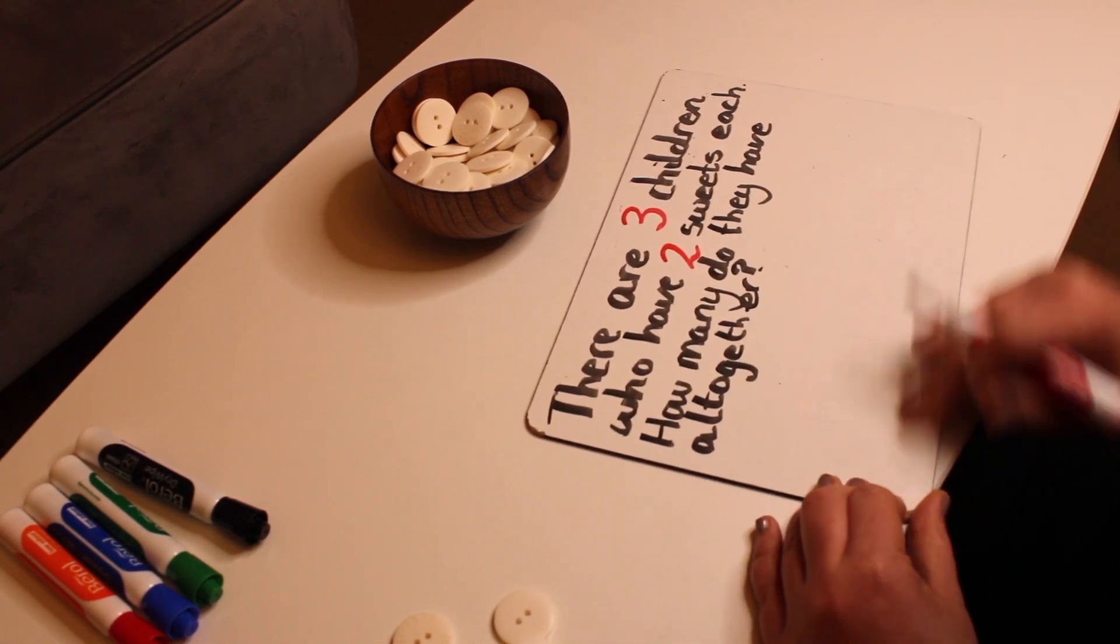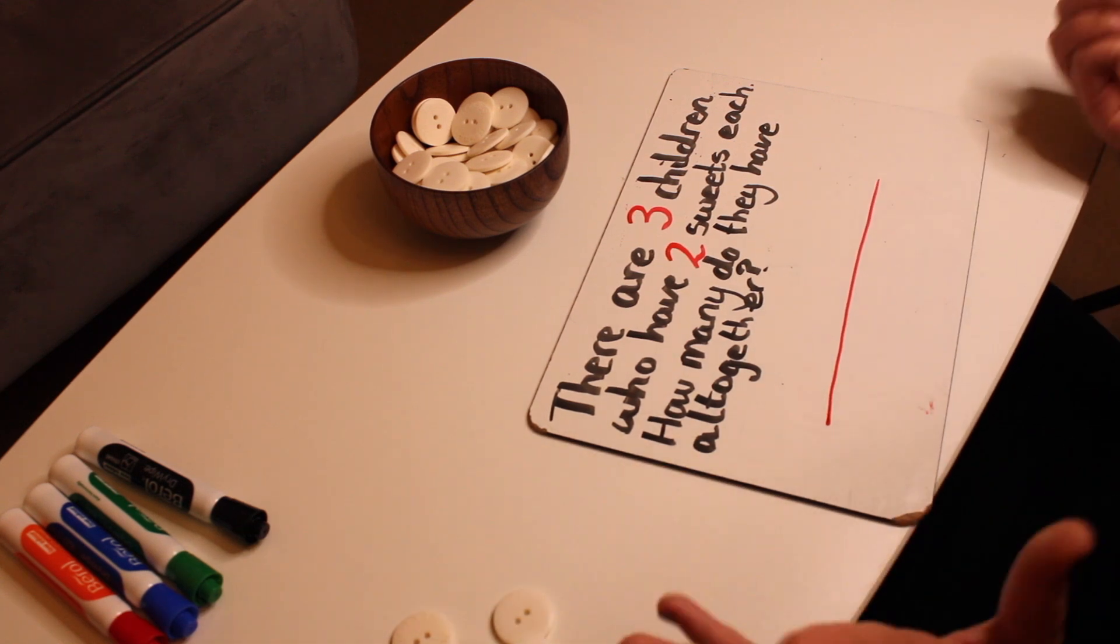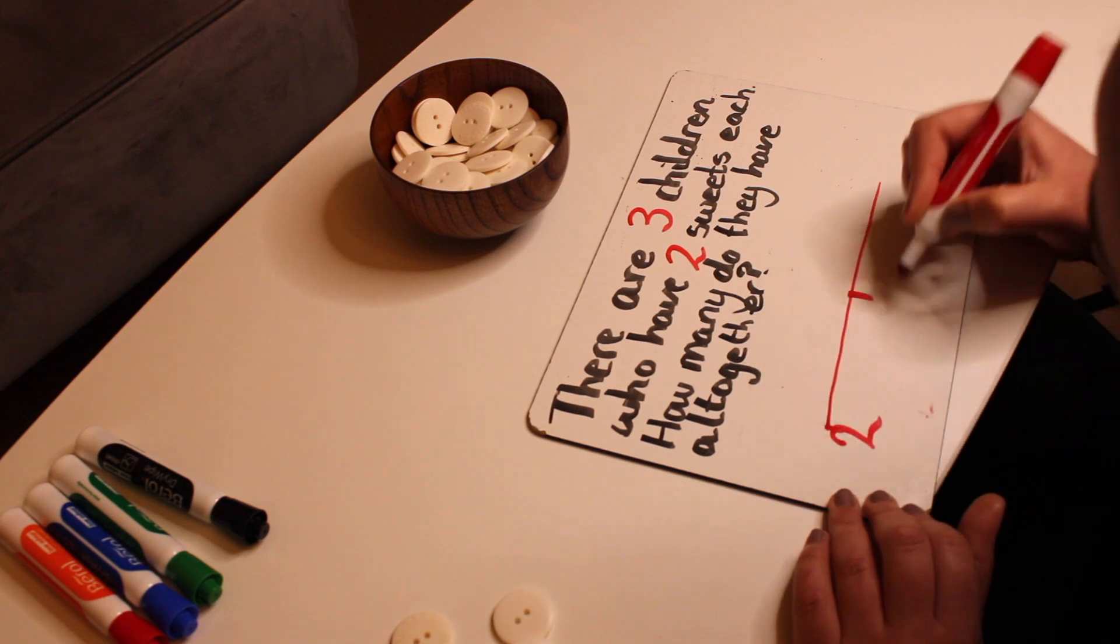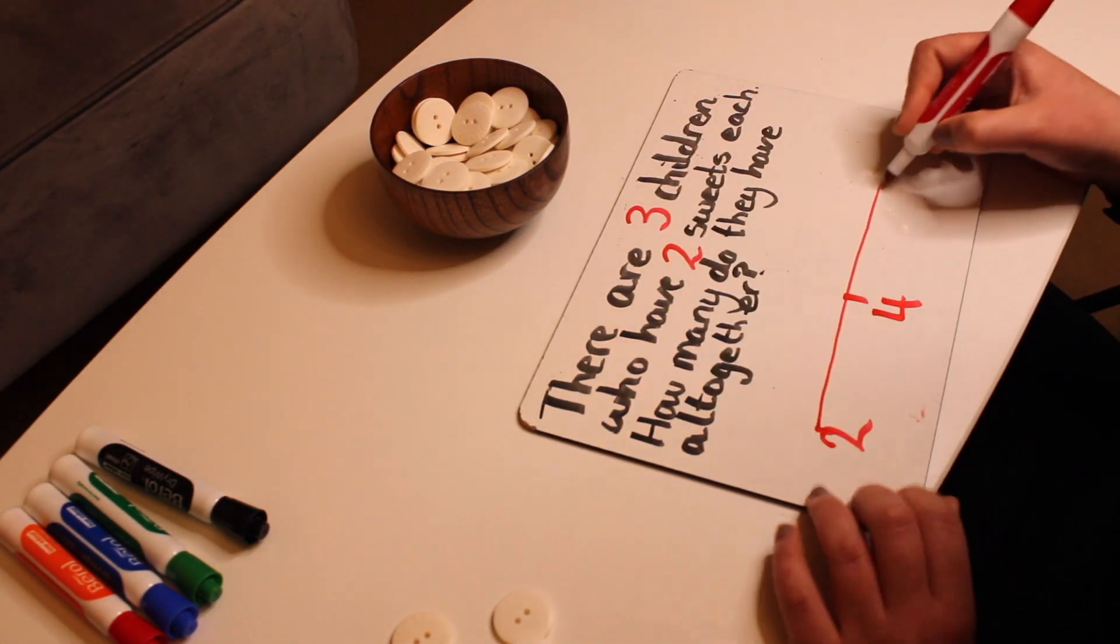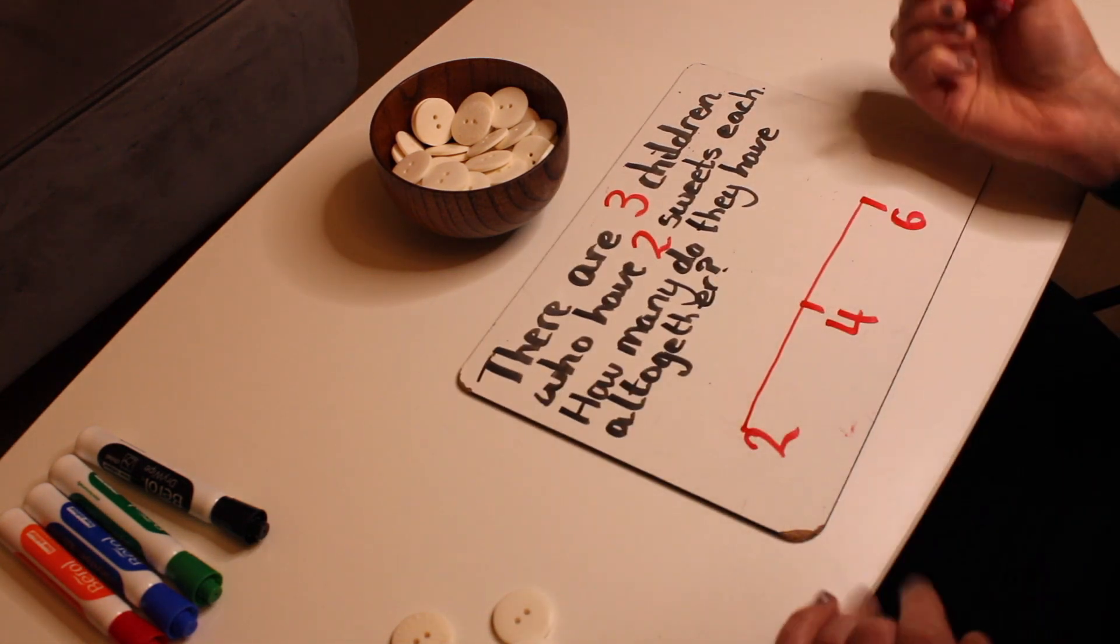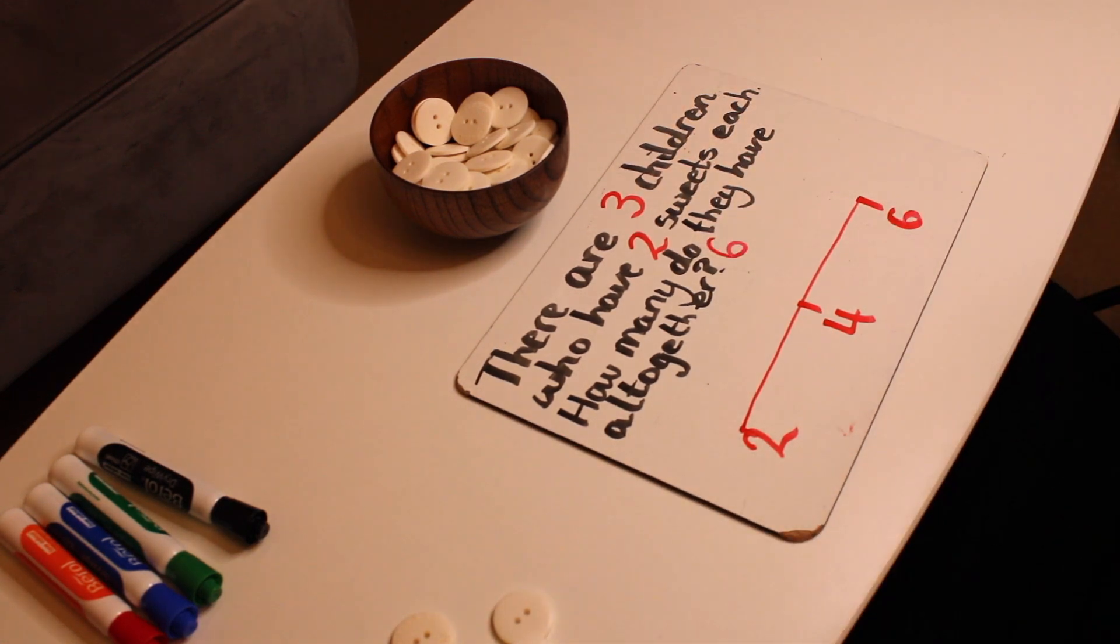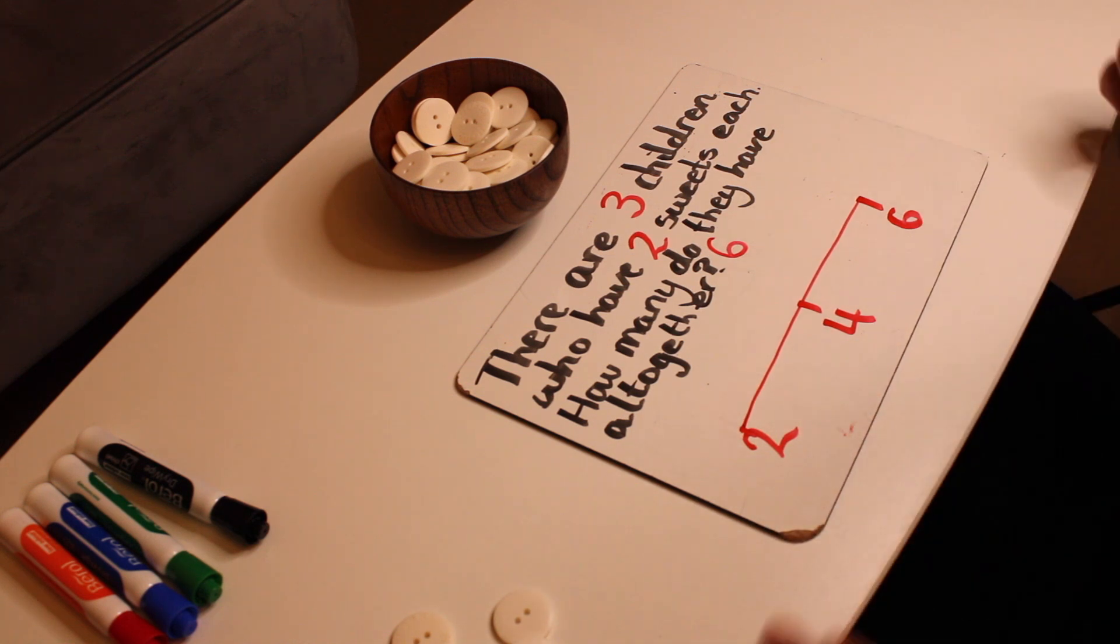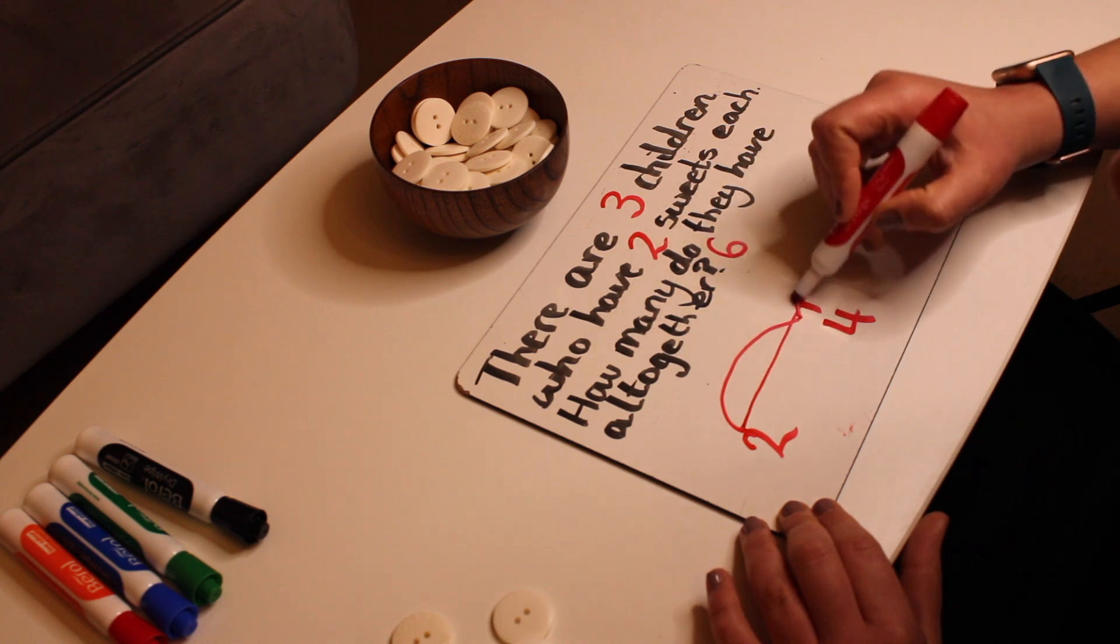Next, you can use the number line. So you can show them on the number line. So one child has two. The other child has, then it's four. Two and two make four. And then another two is six. All the children together have six. You can now start to write the abstract method. So here, we've shown a number line of counting in twos.